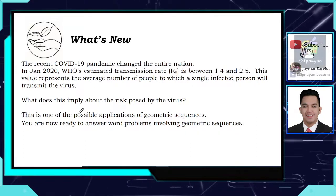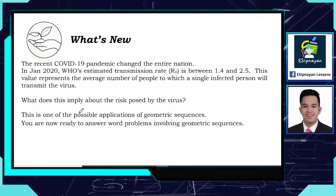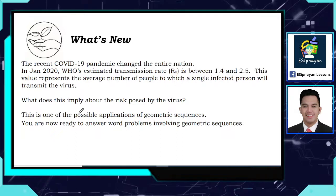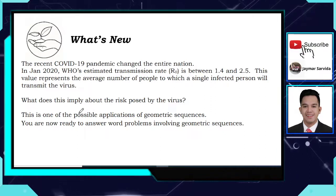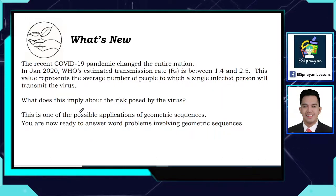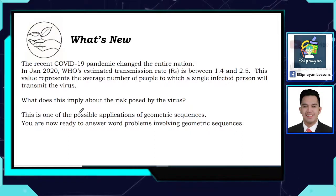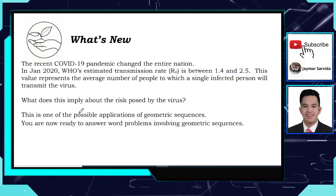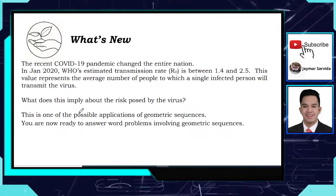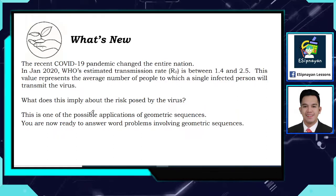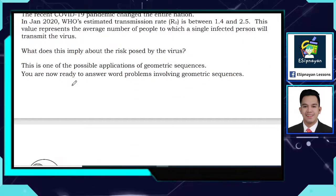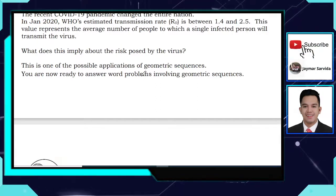The recent COVID-19 pandemic changed the entire nation. In January 2020, WHO's estimated transmission rate, or R0, is between 1.4 and 2.5. This value represents the average number of people to which a single infected person will transmit the virus. So, what does this imply about the risk posed by the virus? This is one of the possible applications of geometric sequences.